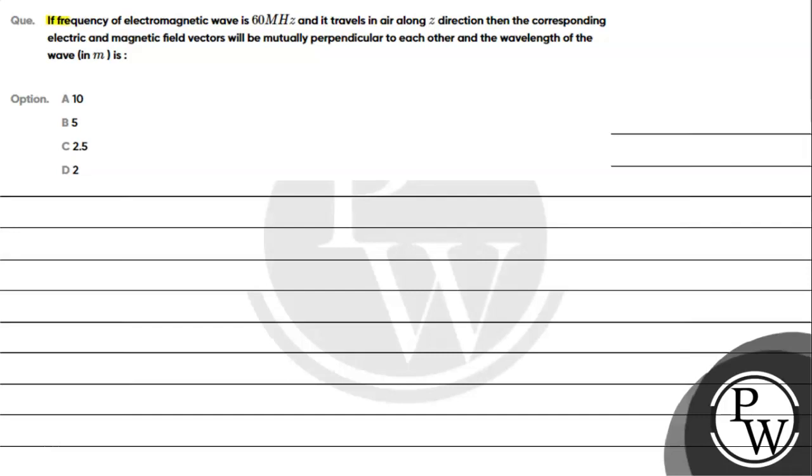Hello, let's read the given question. The question says if frequency of electromagnetic wave is 60 megahertz and it travels in air along z direction, then the corresponding electric and magnetic field vectors will be mutually perpendicular to each other and the wavelength of the wave in meters is: Option A: 10, Option B: 5, Option C: 2.5